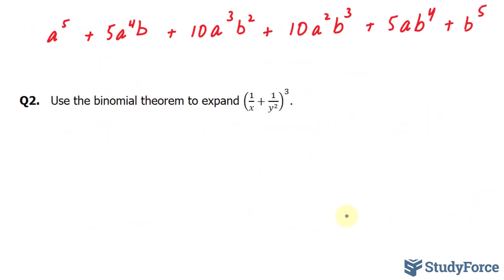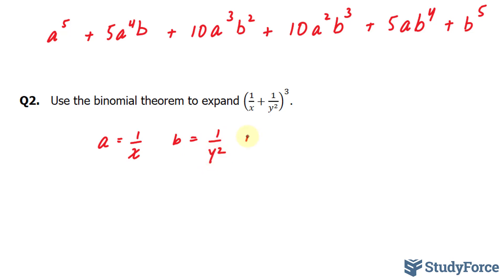In question two, we're expected to use the binomial theorem to expand the following expression. This time, our a and b need to be defined. Our a will be one over x, and our b will be one over y to the power of two. N is equal to three.